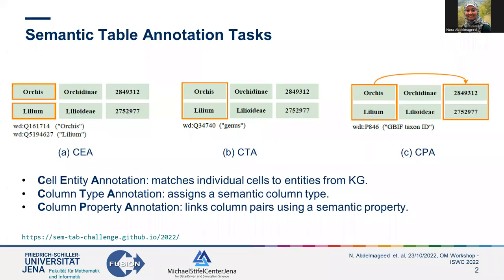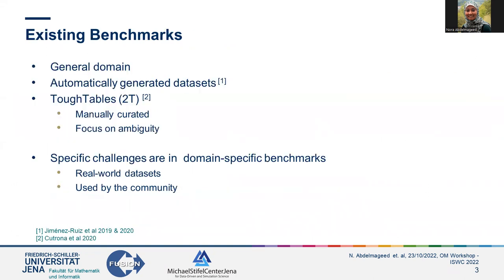Semantic Table Annotation has gained increasing attention during the previous years, especially since 2019 when the SemTab Challenge started, with focus on the most common tasks. CEA or Cell Entity Annotation matches individual cells to entities from the Knowledge Graph. CTA or Column Type Annotation assigns a semantic type to the table column. Column Property Annotation or CPA links column pairs using a semantic property from the Knowledge Graph. Semantic Table Annotation tasks are usually evaluated by benchmarks, which are mostly automatically generated and derived from the general domain. However, TuffTable's dataset is an exception, where it is manually curated and focuses on ambiguity. Domain-specific real-world benchmarks pose specific challenges not yet addressed in the community.